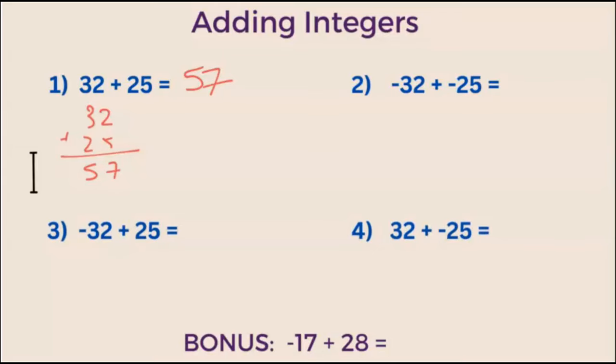Example 2. What is negative 32 plus negative 25? I will go ahead and tell you rule number 2 now. When you are adding two negative numbers, the answer will always be negative. Since that is the case, we simply add the numbers together.